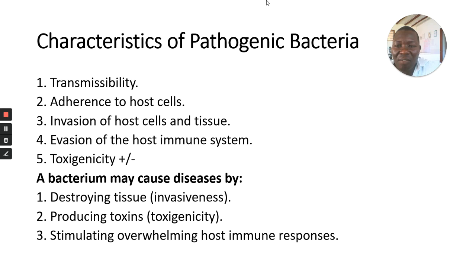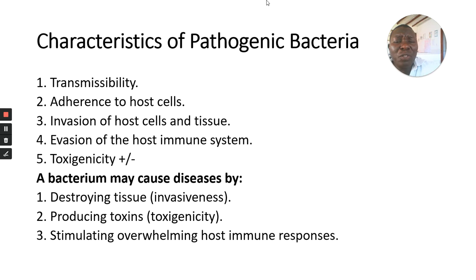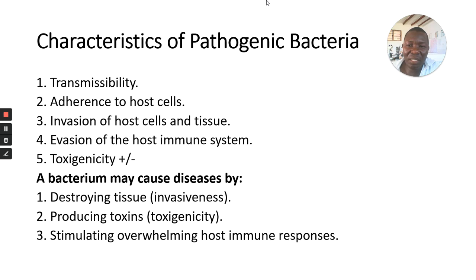Adherence to the host: the bacteria has to be able to attach itself and adhere there and multiply. Adherence is quite an important way for the bacteria to be able to attach itself. The next stage is invasion — invading the host cell and tissue. Other than the place of initial infection, it needs to spread to other cells, tissues, or organs. Evasion of the host immune response is also quite important, so that the bacteria can escape the immunological response — the immune cells, antibodies, interferons, and complement chemicals all need to be evaded.